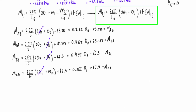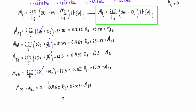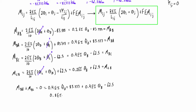We also have the compatibility equation: M-BA plus M-BC equals zero. We take the two expressions and add them together and set the sum equal to zero. Combining the EI·θB terms gives 0.8EI·θB, and combining the constants gives negative 20.83.